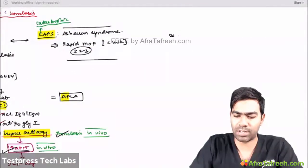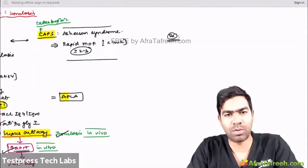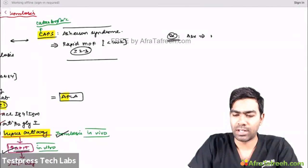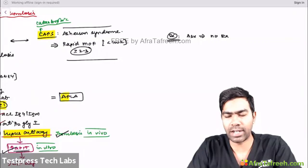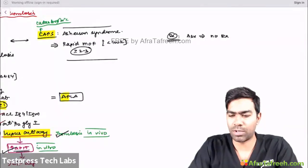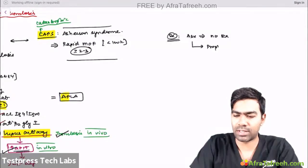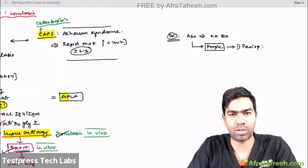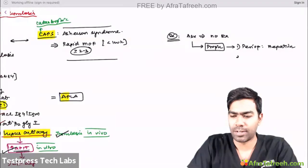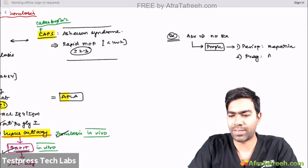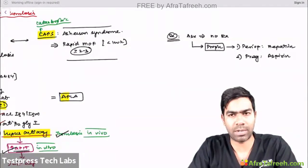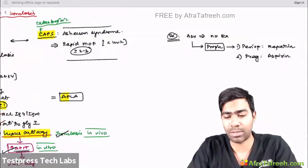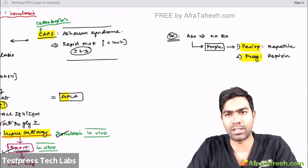For treatment of APLA syndrome, two scenarios must be addressed: thrombosis and recurrent pregnancy loss. If the patient is asymptomatic, no treatment is generally needed. However, prophylactic anticoagulation is indicated in two situations even in asymptomatic patients: (1) the perioperative period — use heparin, and (2) during pregnancy — use aspirin. These are the only two indications for prophylaxis in asymptomatic APLA patients.